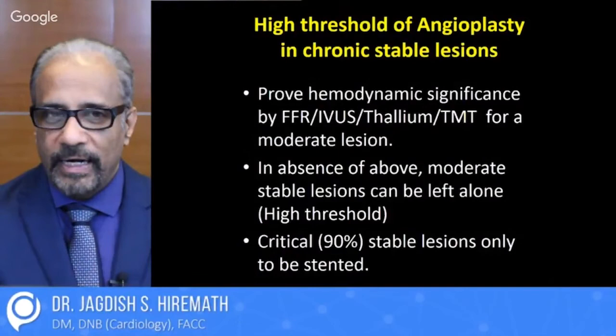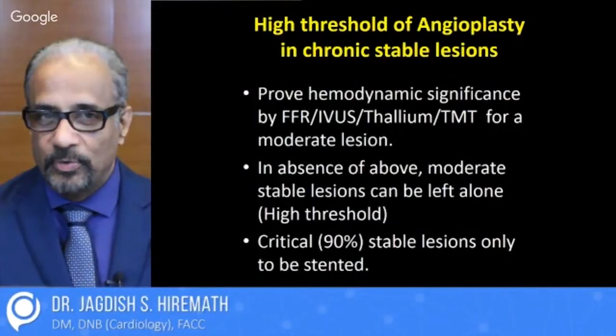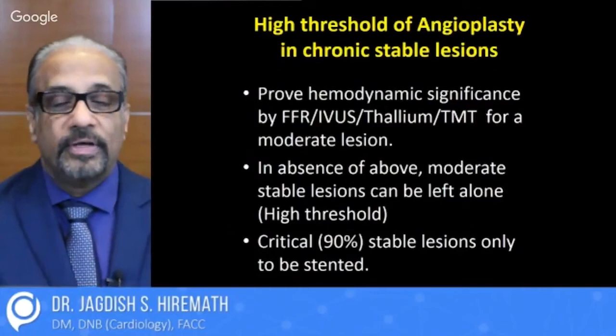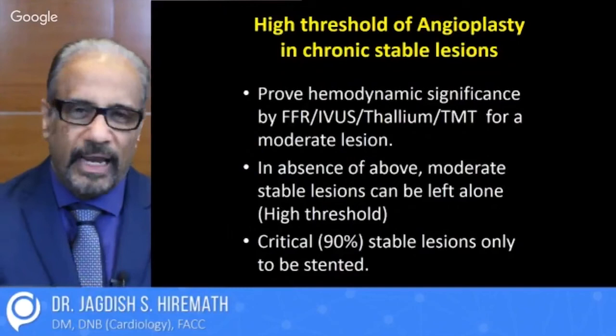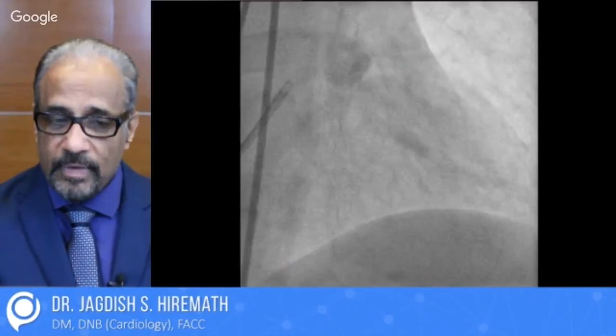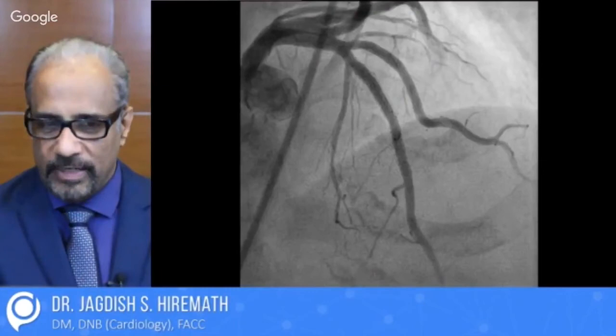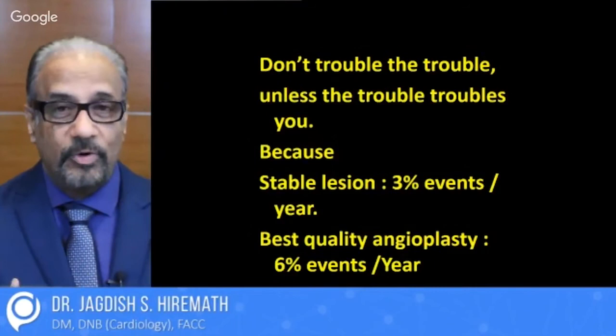Whereas in chronic stable lesions, our threshold for stenting is high. We must prove that this stable lesion is causing angina either by way of FFR, IVUS, thallium, or TMT. In the absence of documentation of ischemia, probably lesions are not stented. If a 90% stable lesion is there, then of course it should be stented straight away. You can see that this is a very stable lesion — no ulcer, no thrombus — and after stenting, it's a great angiographic result. About chronic stable angina, we always have a statement: don't trouble the trouble unless the trouble troubles you.